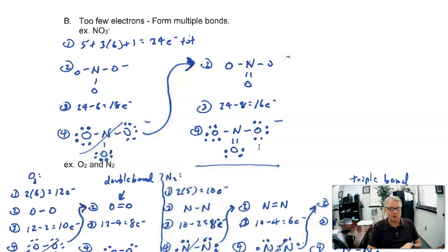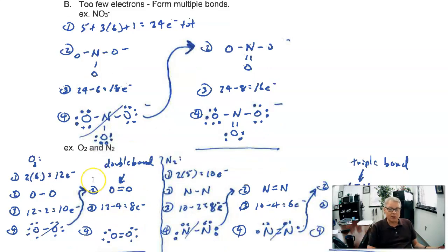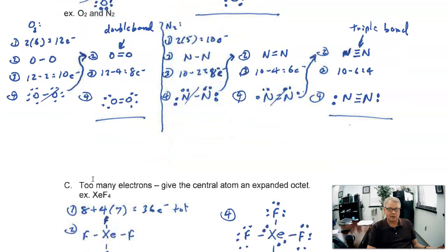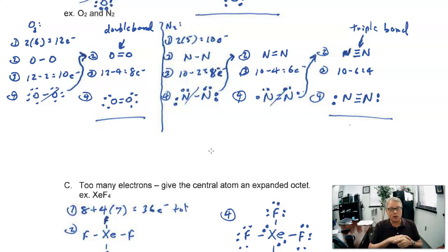Moral of the story: if you don't have enough electrons to go around, try putting a double bond in there and see if that works. So what are you breathing in right now? Well, about 78% of what you're breathing is actually nitrogen, and about 21% is oxygen. You're using the oxygen, so biology tells you that you breathe in oxygen. But in reality, you're breathing in mostly nitrogen too.